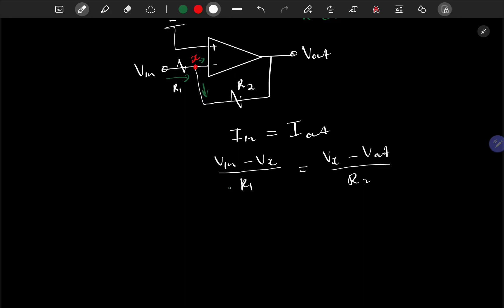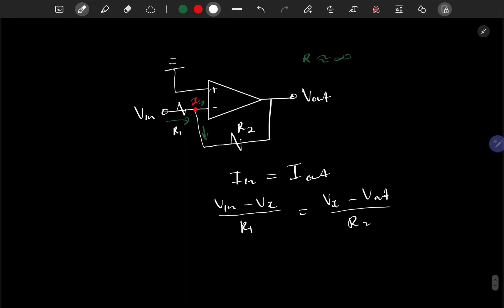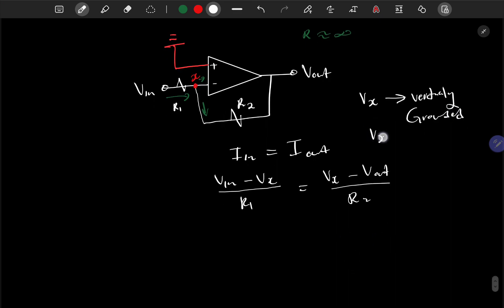Now, I said because this part is grounded, if this part is grounded then that means also the Vx is virtually grounded. So Vx is virtually grounded, meaning that it has some potential of zero. So I can say Vx is somewhere zero. Okay, if that is zero then we'll have Vin over R1 equals Vout over R2.